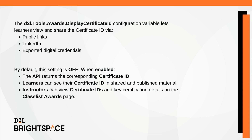When enabled, the following behavior is expected, ensuring a seamless experience for administrators, learners, and instructors. The API returns the corresponding Certificate ID. Learners can see their Certificate ID in generated PDFs, on award pages, and in their LinkedIn profile if they publish the award there. And instructors can view Certificate IDs on the Class List Awards page, along with key certification details.